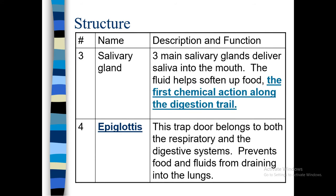Third is the salivary glands. Three main salivary glands deliver saliva into the mouth. This fluid helps soften the food. This is the first chemical action along the digestion trail. The parotid glands and submandibular glands help produce the three main salivary glands and use saliva.